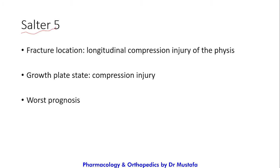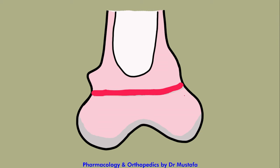Salter-Harris Grade 5 involves a longitudinal compression injury of the epiphysis — more of a compression injury. The growth plate is compressed and therefore injured, and it has the worst prognosis. The growth plate is compressed by a compressive force hitting the bone.